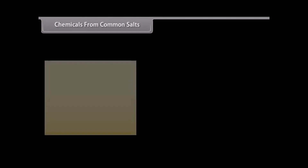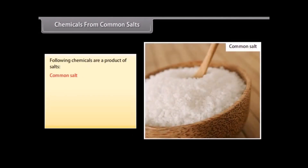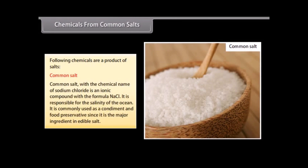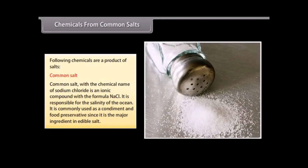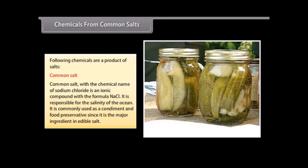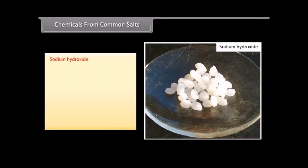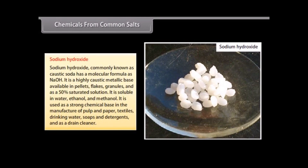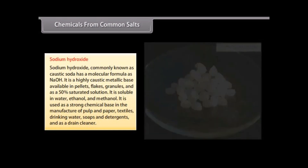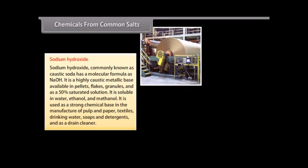Chemicals from common salts. Common salt, with the chemical name sodium chloride, is an ionic compound with the formula NaCl. It is responsible for the salinity of the ocean and is commonly used as a condiment and food preservative. Sodium hydroxide, commonly known as caustic soda, has the molecular formula NaOH. It is a highly caustic metallic base available in pellets, flakes, and granules, and as a 50% saturated solution. It is soluble in water, ethanol, and methanol, and is used in the manufacture of pulp and paper, textiles, drinking water, soaps, and detergents, and as a drain cleaner.